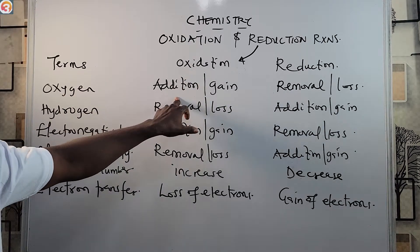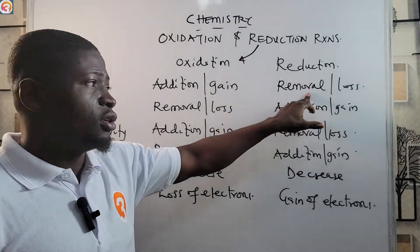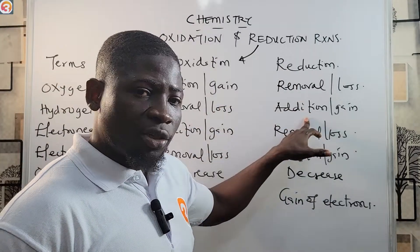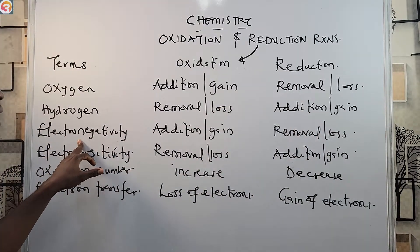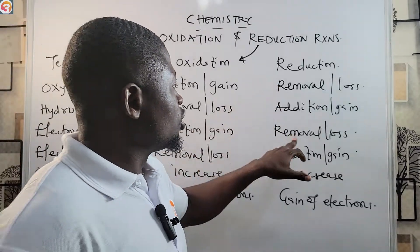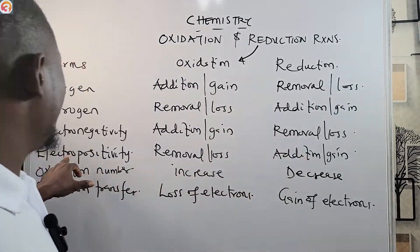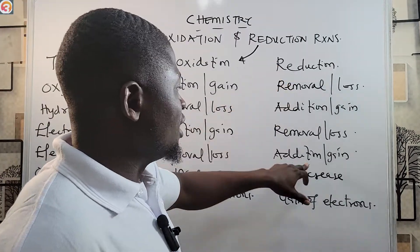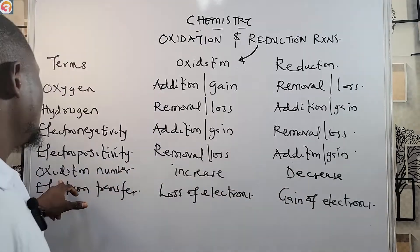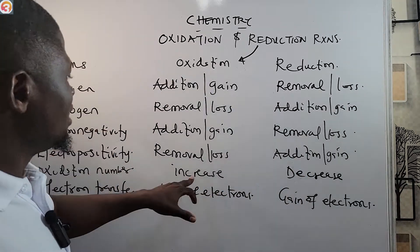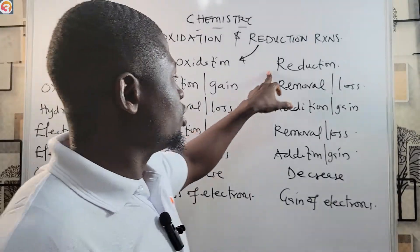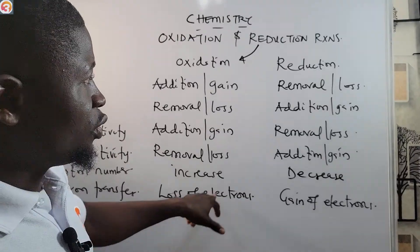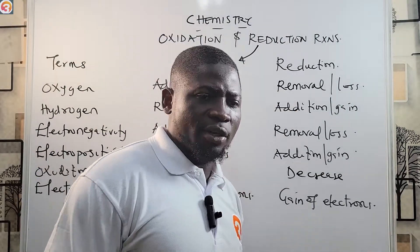To summarize all definitions: in terms of oxygen, oxidation is addition/gain and reduction is removal/loss. In terms of hydrogen, oxidation is removal/loss and reduction is addition/gain. In terms of electronegativity, oxidation is addition/gain and reduction is removal/loss. In terms of electropositivity, oxidation is removal/loss and reduction is addition/gain. In terms of oxidation number, oxidation is increase and reduction is decrease. In terms of electron transfer, oxidation is loss of electrons and reduction is gain of electrons.